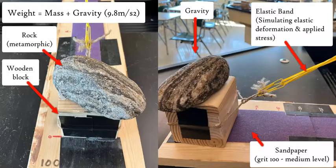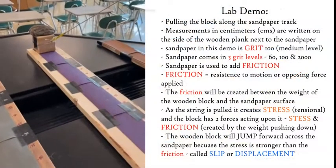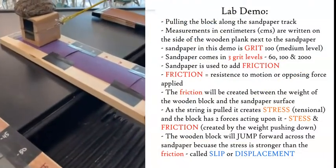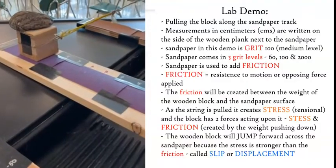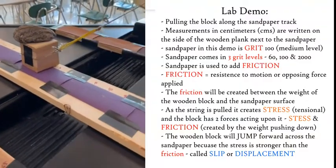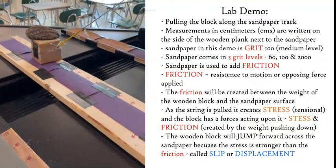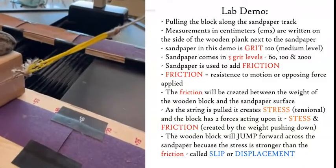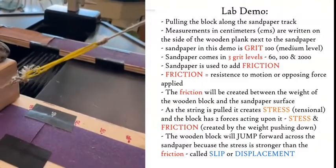We're going to observe what happens as the block is pulled along this sandpaper track from a starting point to the end, measured in centimeters. As we pull the block along the sandpaper, the rock and the weight of the block adds mass and causes lots of friction. The block is very jumpy — not consistent. It moves and stops repeatedly, due to the elastic band, elastic deformation, and the stress applied from pulling the block along the sandpaper.